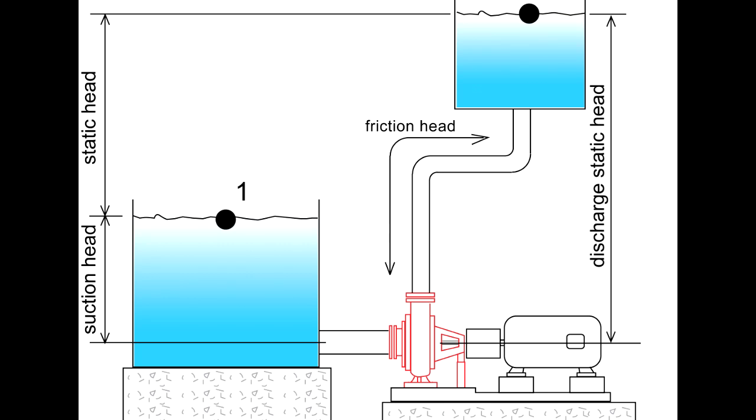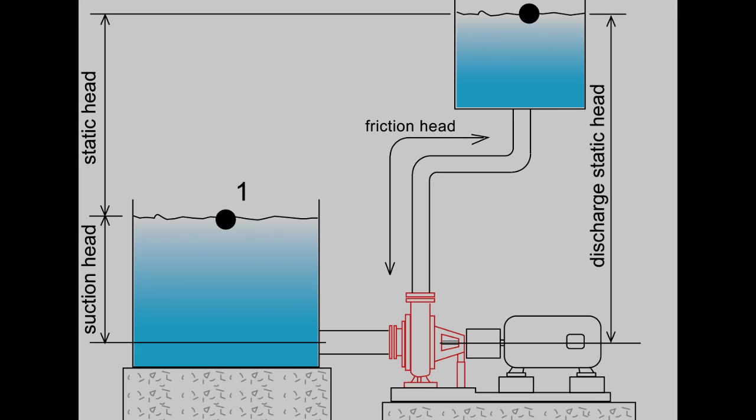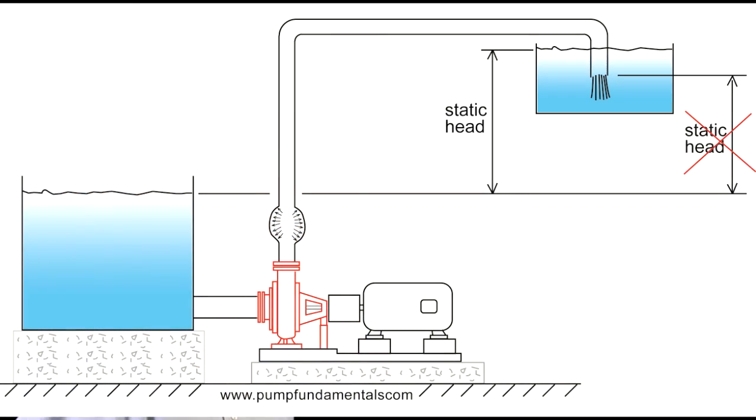If the pipe end is submerged at the discharge side, we take the head between two liquid surfaces and not to the end of the pipe, because we've got to follow liquid from one end to the other. All those fluid particles have to get from the top of the suction tank to the top of the discharge.